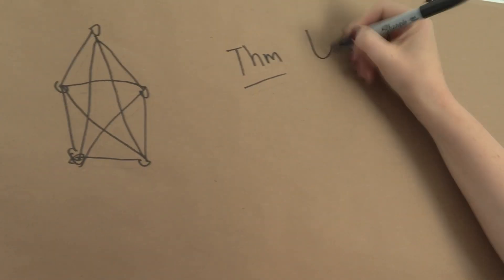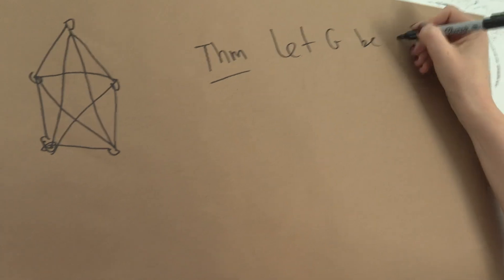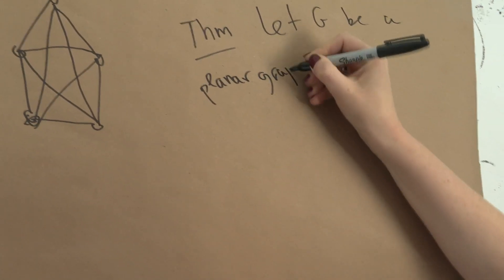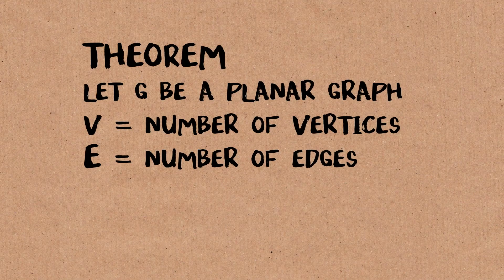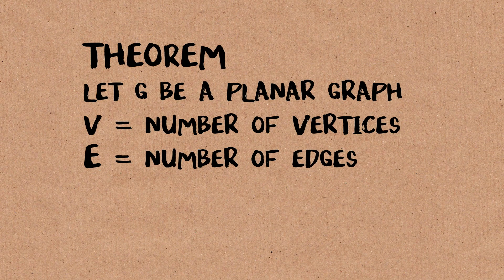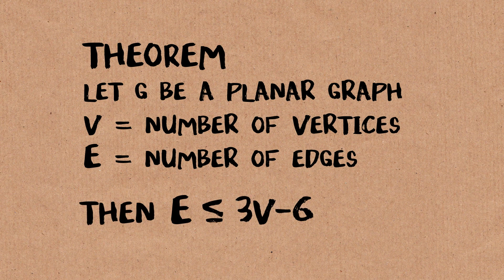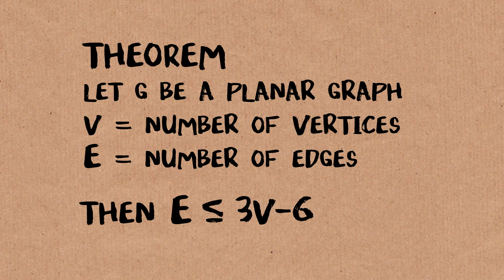let G be a planar graph, and then we have V is the number of vertices, and E is the number of edges. Then E is at most 3V minus 6.